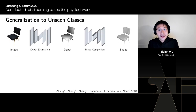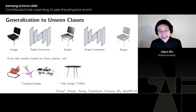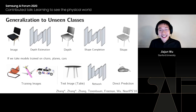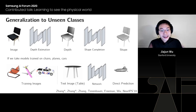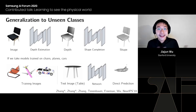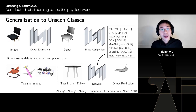But we want to generalize to new objects — objects never seen before. If we train on chairs, planes, and cars and test on a table, we get something that looks much more like an airplane. The system has never seen a table, so it tries to retrieve the nearest shape from its training set. This is not only a problem for our approach — it has been a common problem in the general literature.